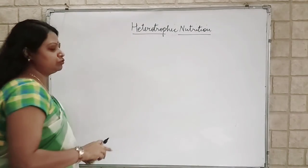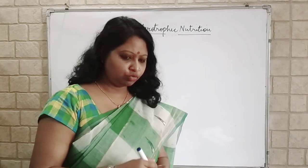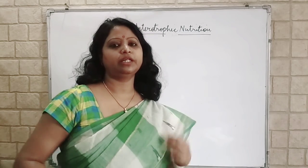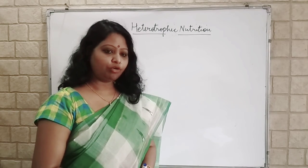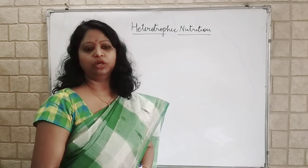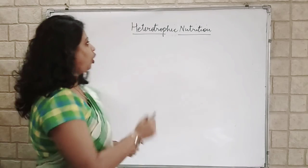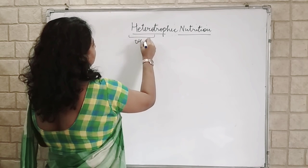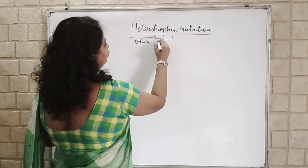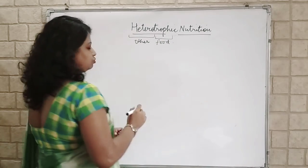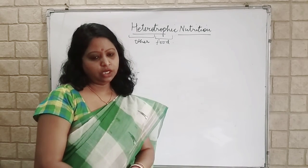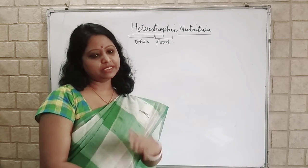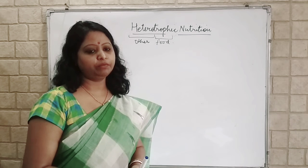So, what is Heterotrophic mode of Nutrition? We have learnt about two modes of Nutrition: Autotrophic and Heterotrophic. In Autotrophic mode, green plants or organisms can prepare their own food. In Heterotrophic mode, organisms cannot prepare their own food — they are dependent on others for food. 'Heteron' means Others and 'Trophe' means Nutrition. So, when an organism is dependent on others for their nutrition, that is known as Heterotrophic mode of Nutrition.